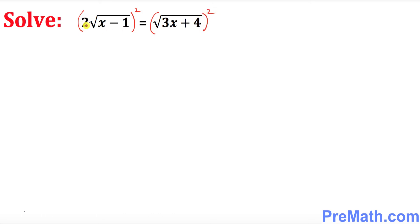So now you can see this 2 is outside the square root. 2 to the power of 2 is going to be 4, and this square root cancels out. So this simply becomes x minus 1 equals to, this cancels out, we got 3x plus 4. So far so good.